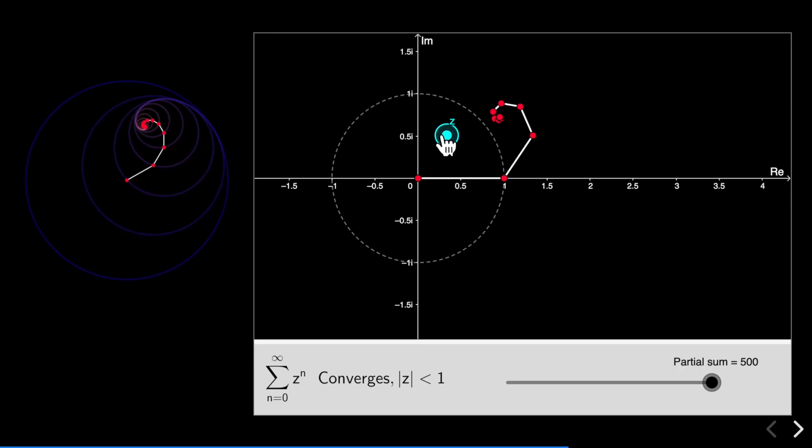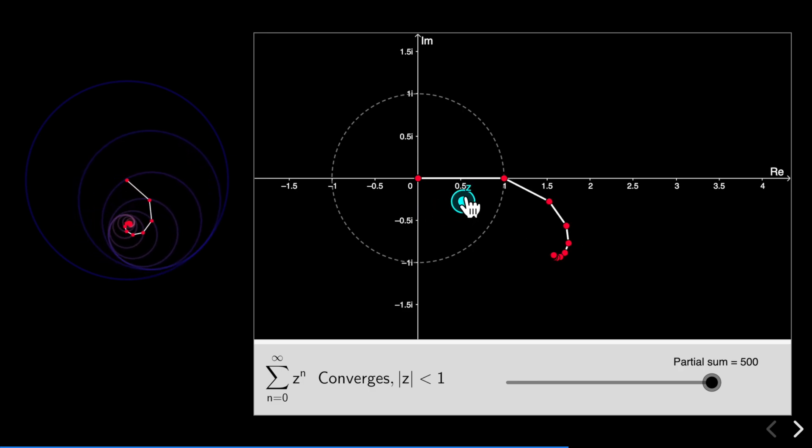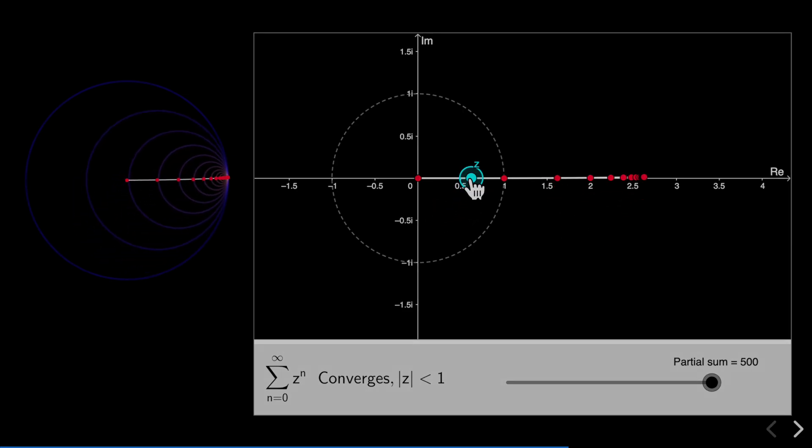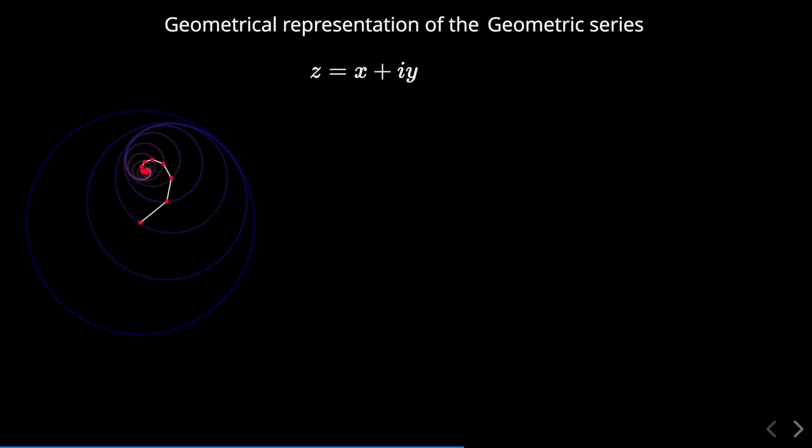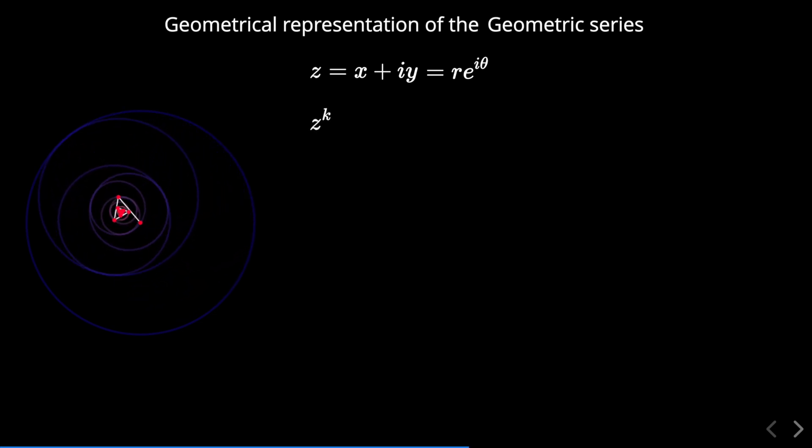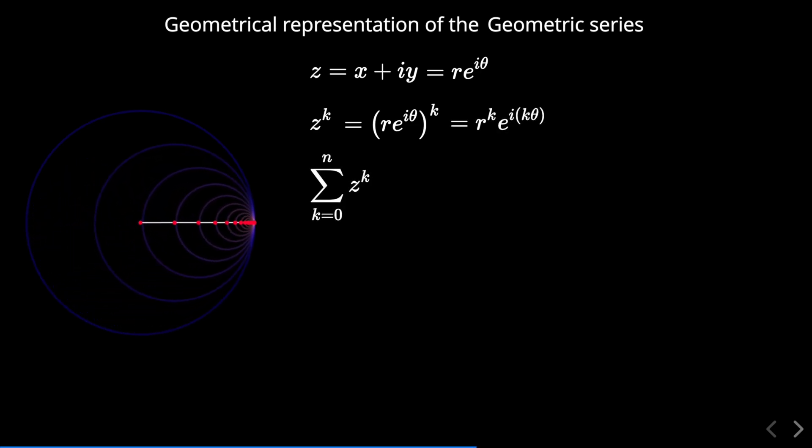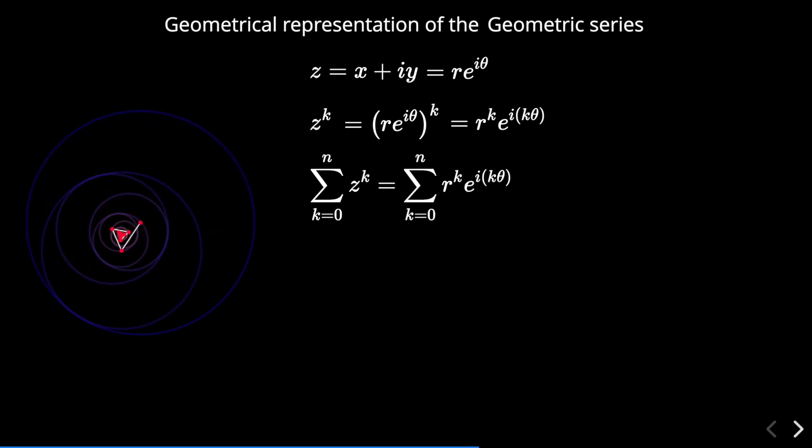Now let's rewrite the geometric series considering the exponential form of a complex number, that is, R exponential of I theta, where R is the modulus and theta is the phase of Z. With this in mind we can easily compute Z to the power of K as you can see here, then the sum from 0 to N of Z to the power of K is equal to the sum from 0 to N of R to the power of K times exponential of I times a multiple of theta.